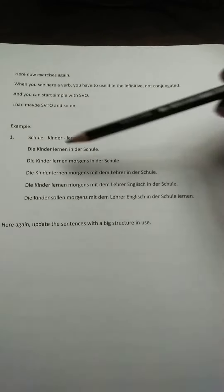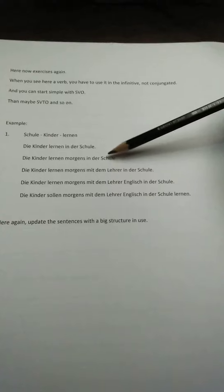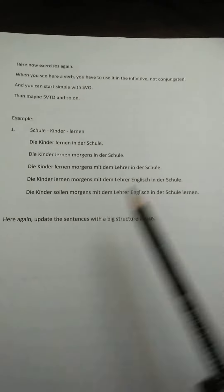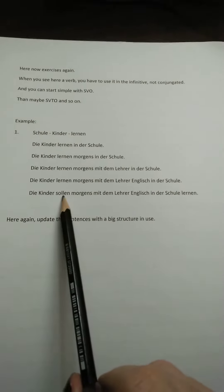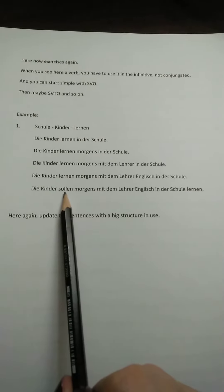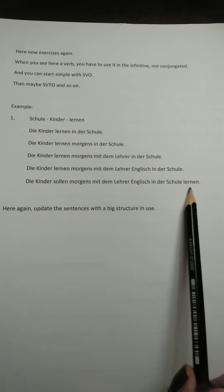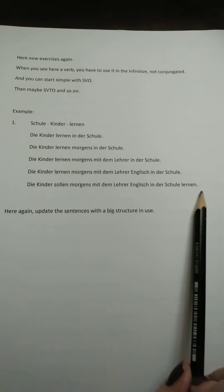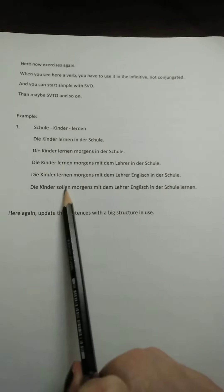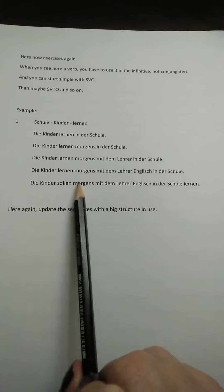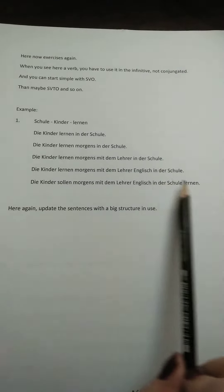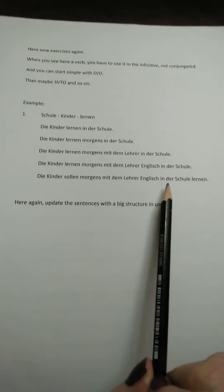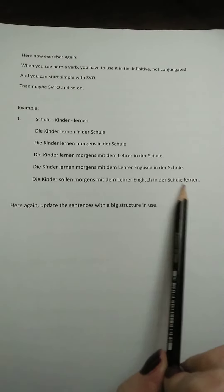So you have here already the strategy: start from very small and build longer and longer. For example, 'die Kinder sollen' — 'sollen' is a modal verb, so you must have verb two as an infinitive at the end. 'Sie sollen lernen,' 'sie sollen morgens lernen,' 'morgens mit dem Lehrer in der Schule lernen.'